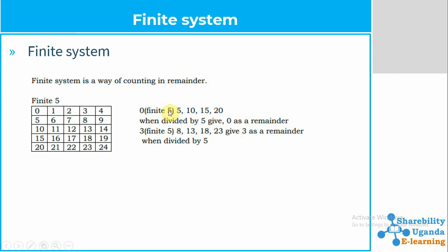So when we write zero finite five, it simply means these numbers have been divided by five to give a remainder of zero. For example, five divided by five gives one remainder zero. Ten divided by five gives two remainder zero. Twenty divided by five gives four remainder zero.